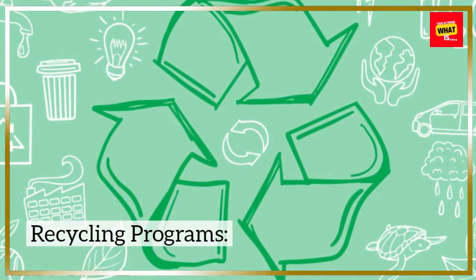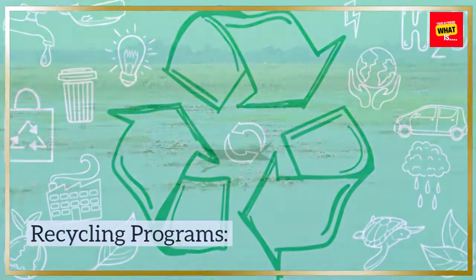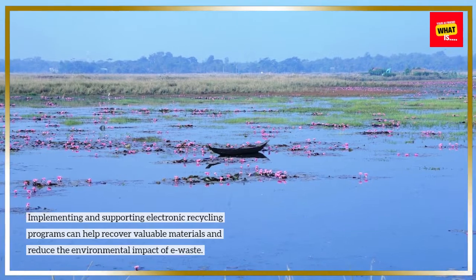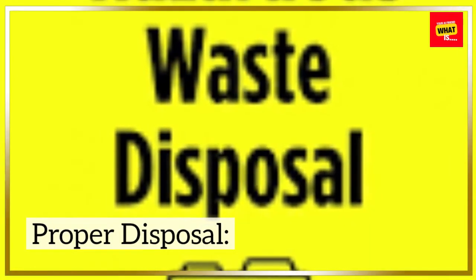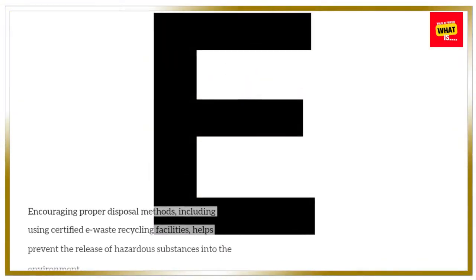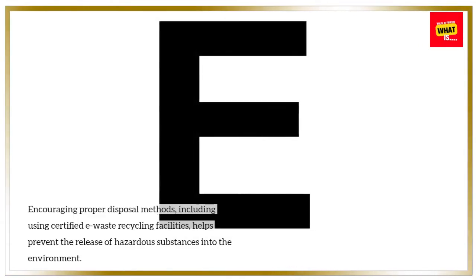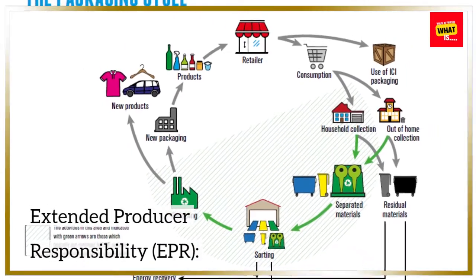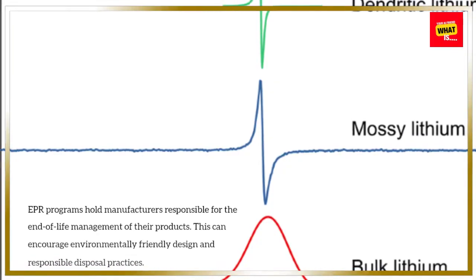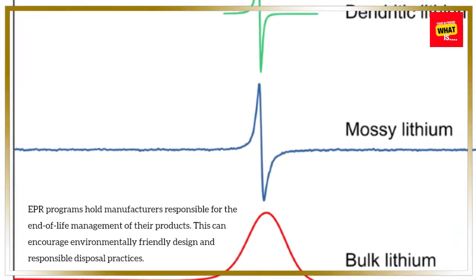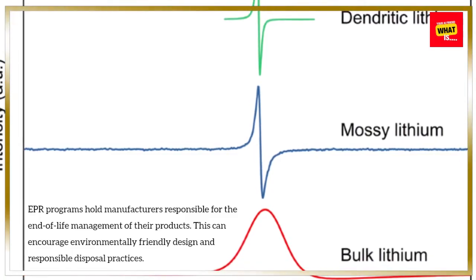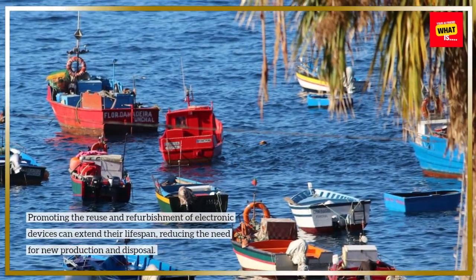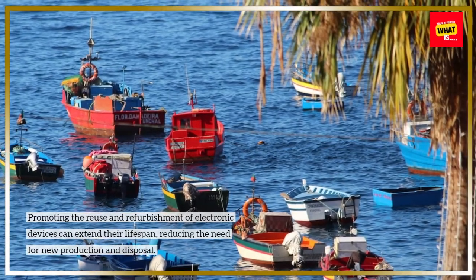Mitigating the Environmental Impact: Recycling Programs — Implementing and supporting electronic recycling programs can help recover valuable materials and reduce the environmental impact of e-waste. Proper Disposal — Encouraging proper disposal methods, including using certified e-waste recycling facilities, helps prevent the release of hazardous substances into the environment. Extended Producer Responsibility (EPR) — EPR programs hold manufacturers responsible for the end-of-life management of their products, encouraging environmentally friendly design and responsible disposal practices. Reuse and Refurbishment — Promoting the reuse and refurbishment of electronic devices can extend their lifespan, reducing the need for new production and disposal.